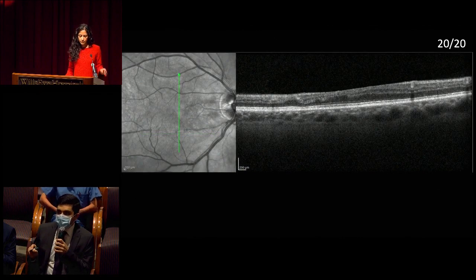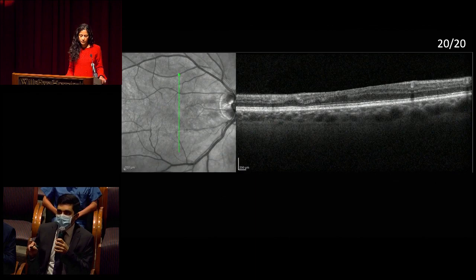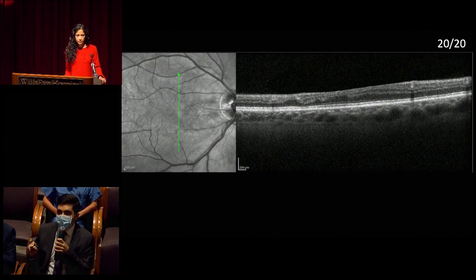This is a vertical cut through the macula, which nicely shows the differential asymmetric involvement — inferior versus superior macula. The superior macula is much better preserved in terms of retinal laminations, while the inferior retina shows those inner retinal changes corresponding to the area of arterial involvement.